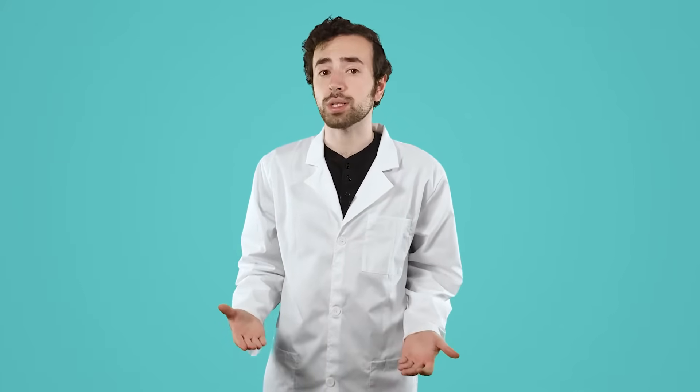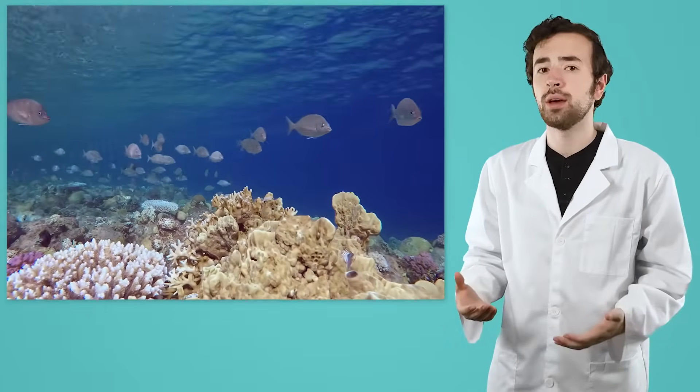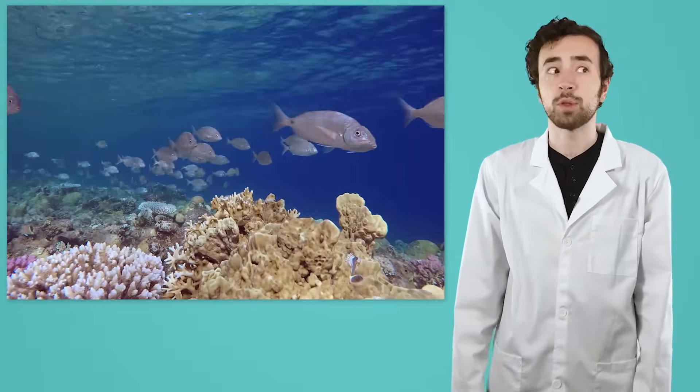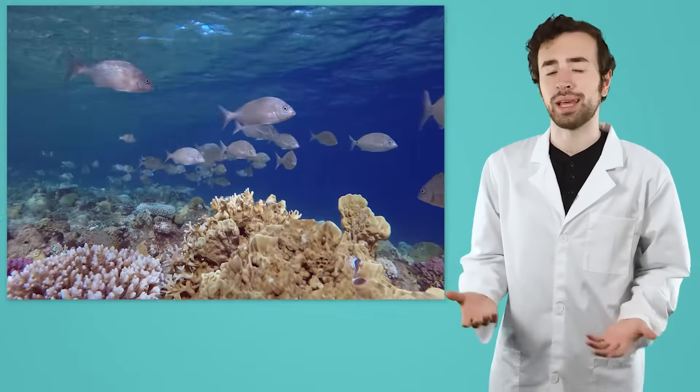Other resources are renewable because natural processes replace their supply as they're used. For example, animals that we eat for energy, such as fish, are a renewable resource. As we remove fish from the population to be eaten, more fish are born, replacing those that are removed. The population is replenished.